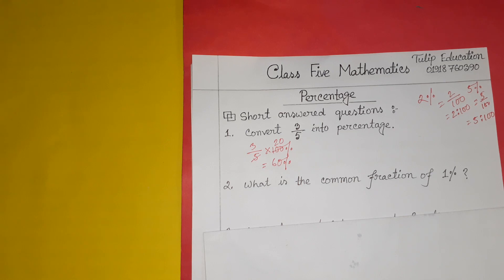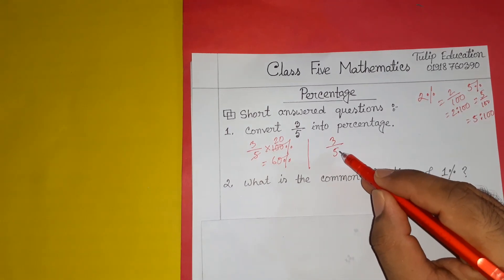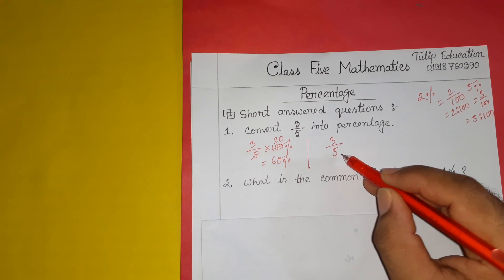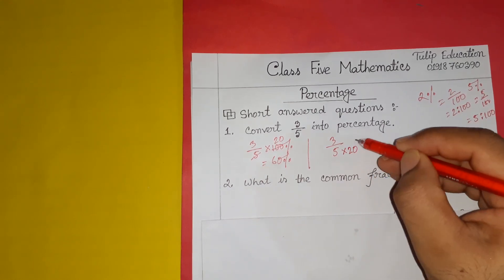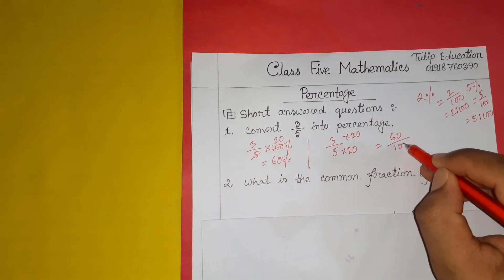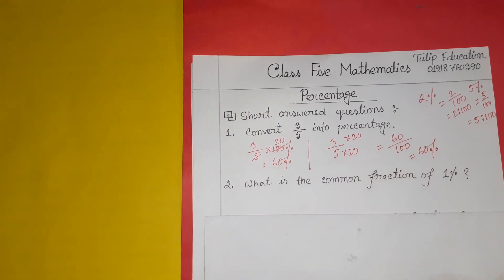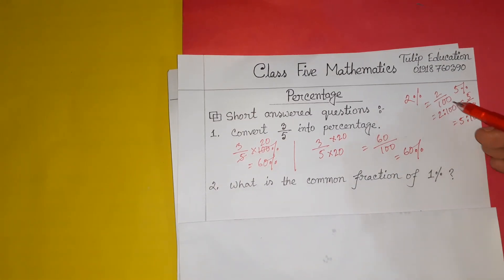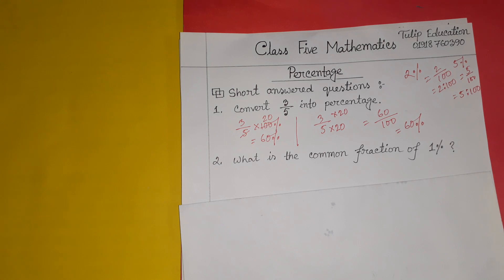So 3 by 5 can be converted to 60%. Alternatively, we convert the denominator to 100 by multiplying both numerator and denominator by 20: 3 times 20 is 60, 5 times 20 is 100, giving us 60 divided by 100, which is 60%. This is how we convert a fraction into percentage.